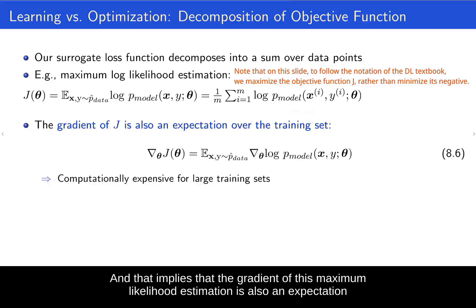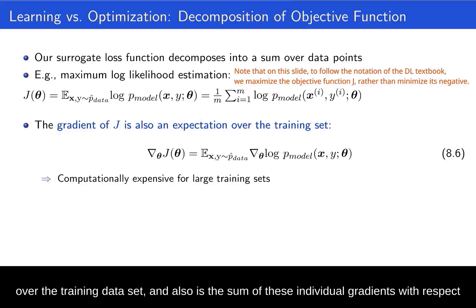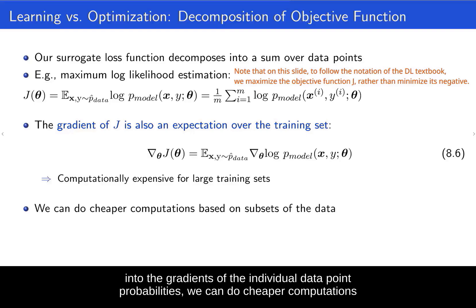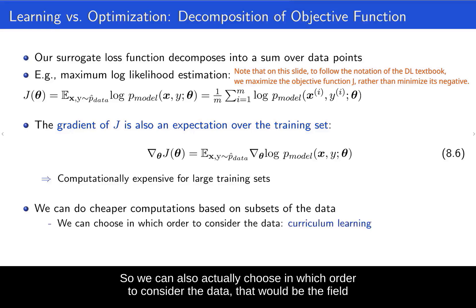And that implies that the gradient of this maximum likelihood estimation is also an expectation over the training data set, and also is the sum of these individual gradients with respect to each of the individual data points. And so this gradient is of course expensive, but since we know that it actually decomposes into the gradients of the individual data point probabilities, we can do cheaper computations based on subsets of the data.